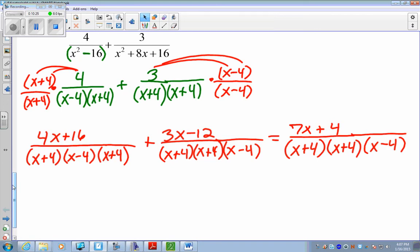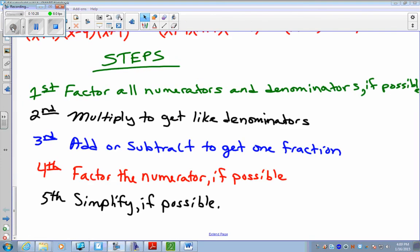Alright. So, I wrote down all of the steps for us. First, factor all the numerators and denominators if possible. Second, multiply to get like denominators. Third, add or subtract to get one fraction. Fourth, factor the numerator if possible. Fifth, simplify if possible. You do these five steps and you'll be on your way to success with 6D, part 1. Thank you.